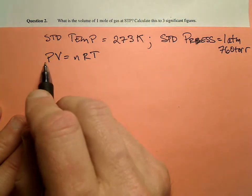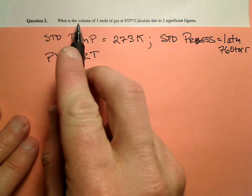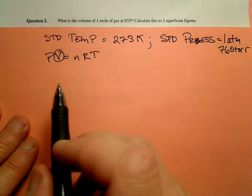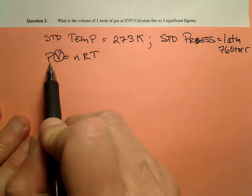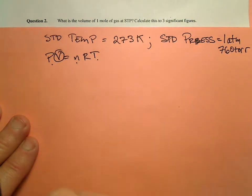All right. So, what are we solving for? Well, it says, what is the volume? So we know we're solving for volume. Okay. So if we're going to solve for volume, we have to know the pressure, the number of moles, and the temperature.